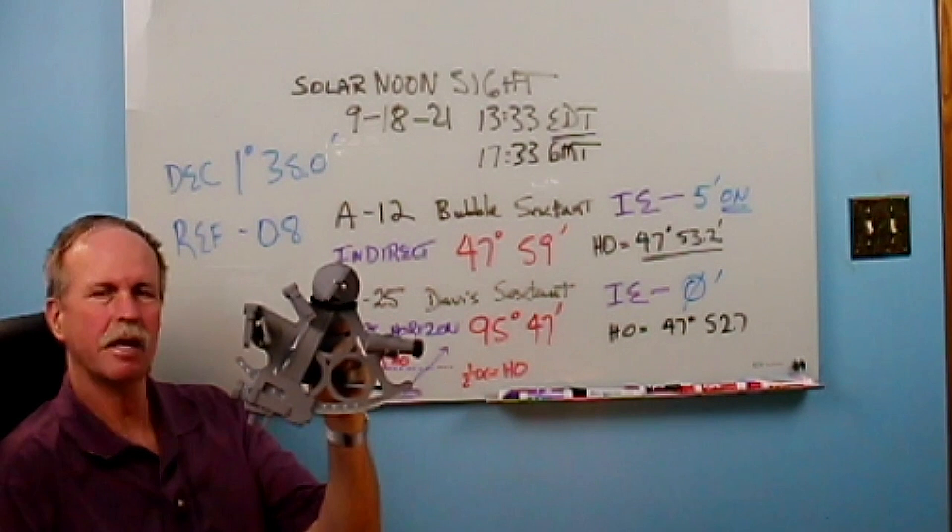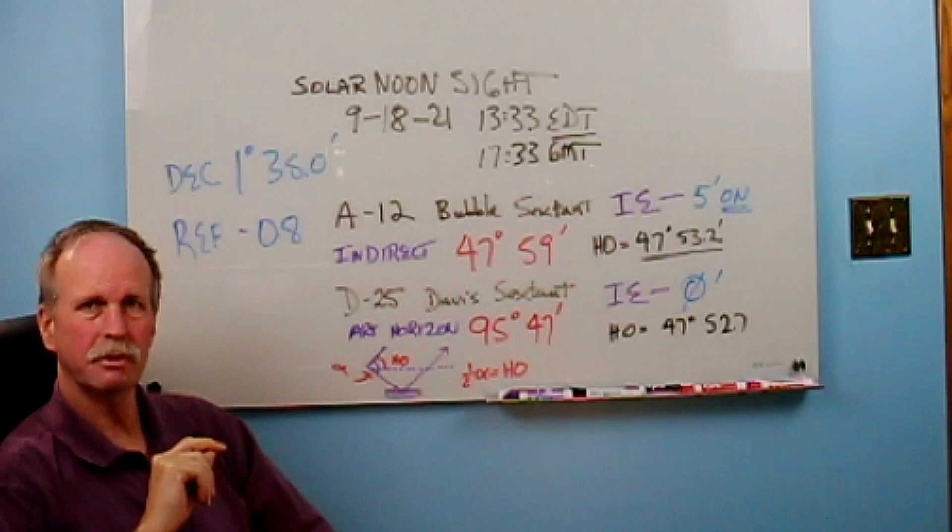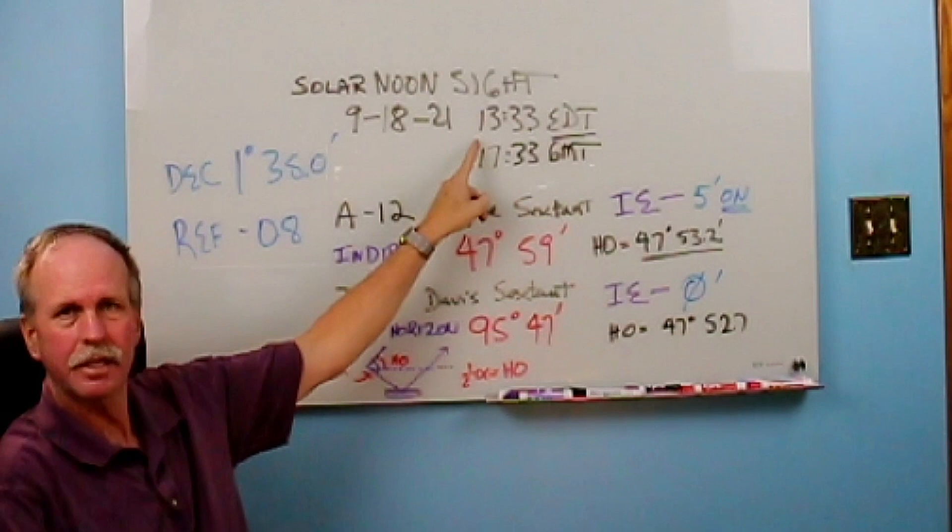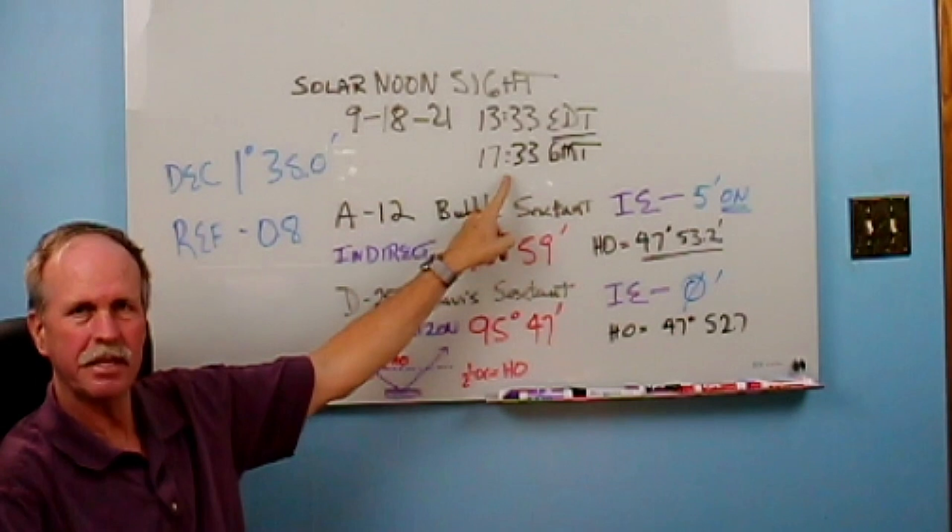So today I went outside and I did two noon sights. The first was with the Link A12 bubble sextant, and then I used a Davis Mark 25 nautical sextant. Solar noon today, September 18th, 2021, was at 1333 hours Eastern Daylight Time, and that's 1733 Greenwich Mean Time.